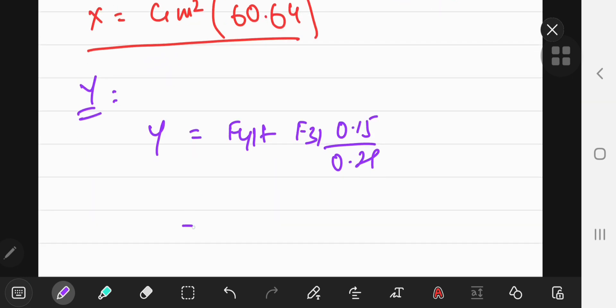And once again, plugging in the values as before, the F sub 3, 1 thing is the same as before. And this is gm squared by 0.15 squared. It's going to be exactly the same as the total x-force. So y equals gm squared times 60.64 as well.